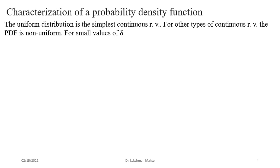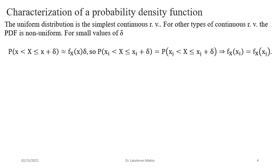The density function for a continuous random variable is probability per unit area. If we take an interval of small length delta, we can approximate the probability that X observes a value between x and x+delta by multiplying the probability density function at x by the width of the interval, i.e., P(x ≤ X ≤ x+δ) ≈ f(x)·δ. This approximation comes directly from the definition of the probability density function.